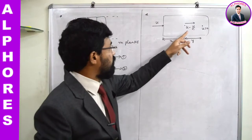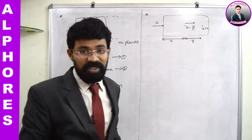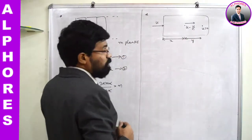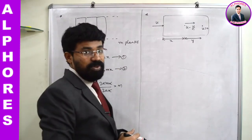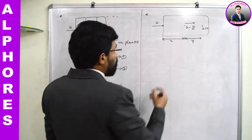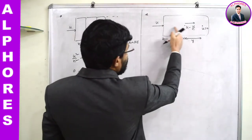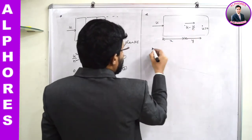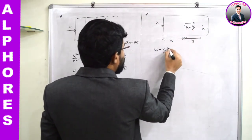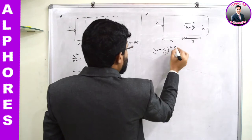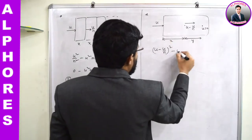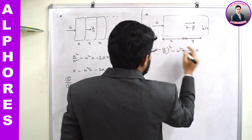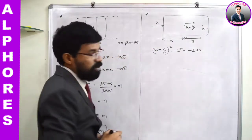Again I will use v² - u² = -2ax. The final velocity corresponding to distance x is u - u/n. So: (u - u/n)² - u² = -2ax. This is equation 1.